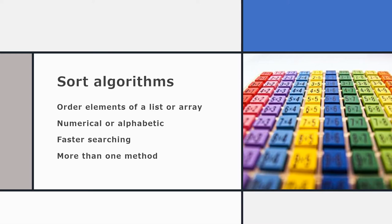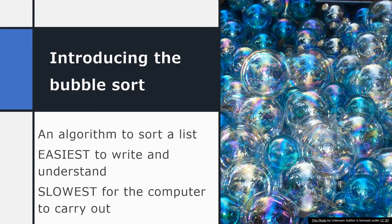However, sorting a list takes quite a lot more time than searching it. There's more than one way of sorting a list, and over the next couple of weeks we'll learn about four key ways of sorting a list. The bubble sort is an algorithm that can be used to sort a list. I would say it's the easiest of the algorithms to write and to understand. However, the big disadvantage is that it is the slowest for the computer to carry out.